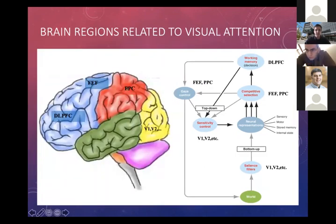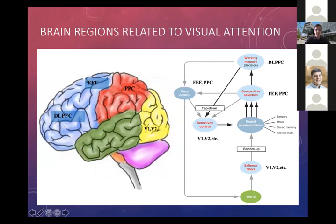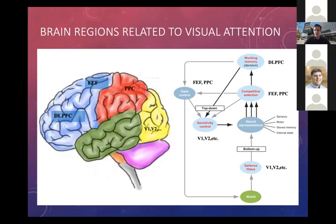Some important brain regions related to visual attention: the DLPFC (dorsolateral prefrontal cortex) is important for working memory. The frontal eye fields (FEF) and the posterior parietal cortex (PPC) are important for gaze control — where you're directing your eyes, or where you direct your attention even without moving your eyes. And then V1, V2, V3, V4, and so on — lots of different visual areas in your occipital cortex — are where you process visual information, and where certain bottom-up features can grab your attention through salience filters.